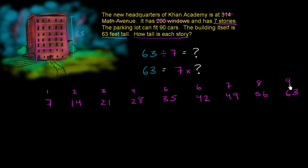So we see seven times nine is 63. So question mark must be equal to nine. So we can write that 63 divided by seven is equal to nine.